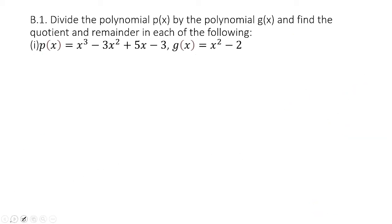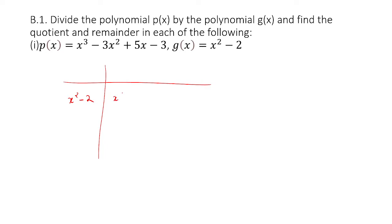Now we'll go with this question. We're asked to find the quotient and the remainder. We have to divide. Since it says divide, we'll use the division algorithm. We're asked to divide the polynomial P(x) by G(x). So what is G(x) here? x squared minus 2. And P(x) is x cubed minus 3x squared plus 5x minus 3.